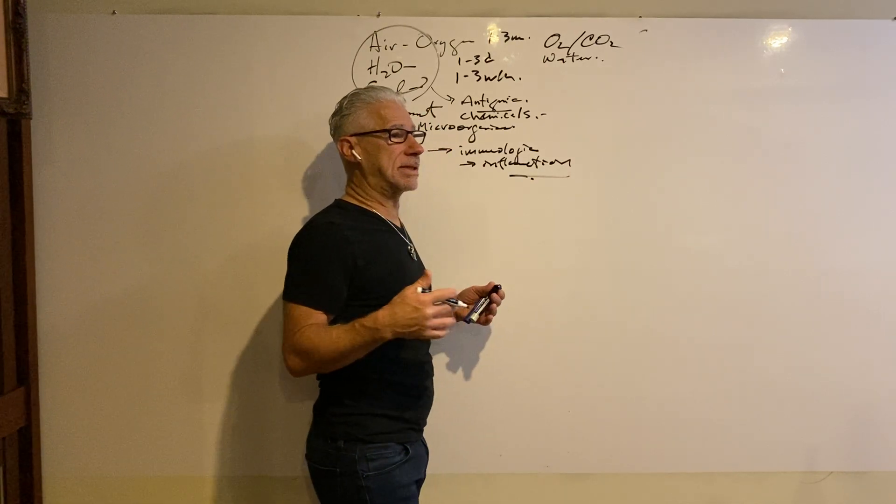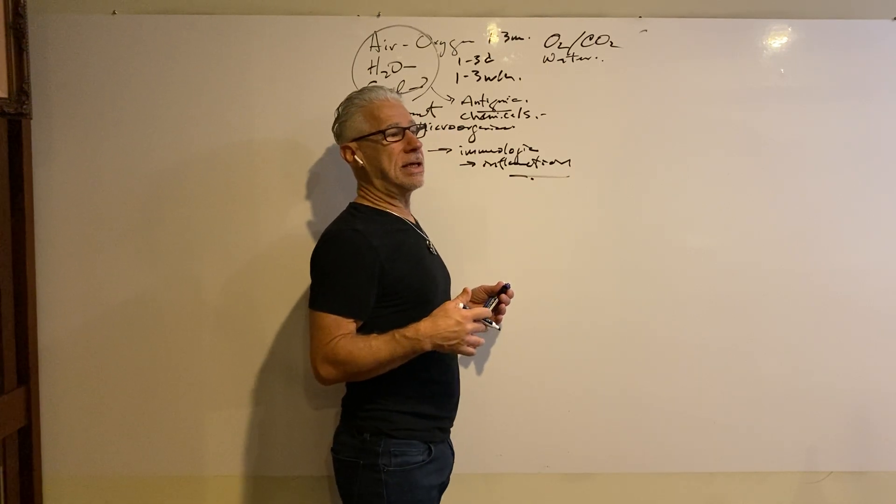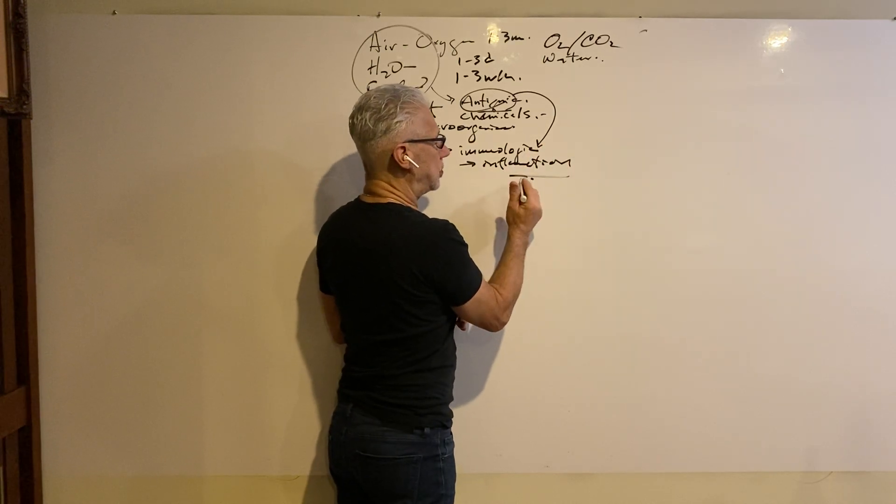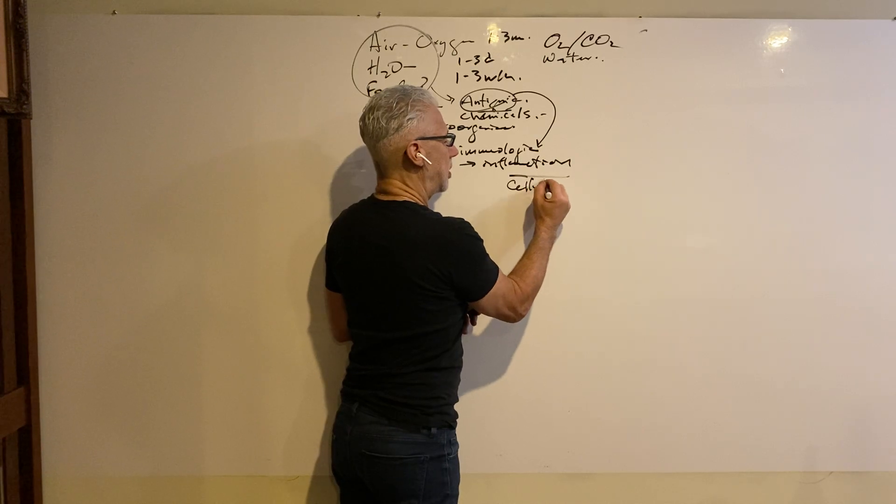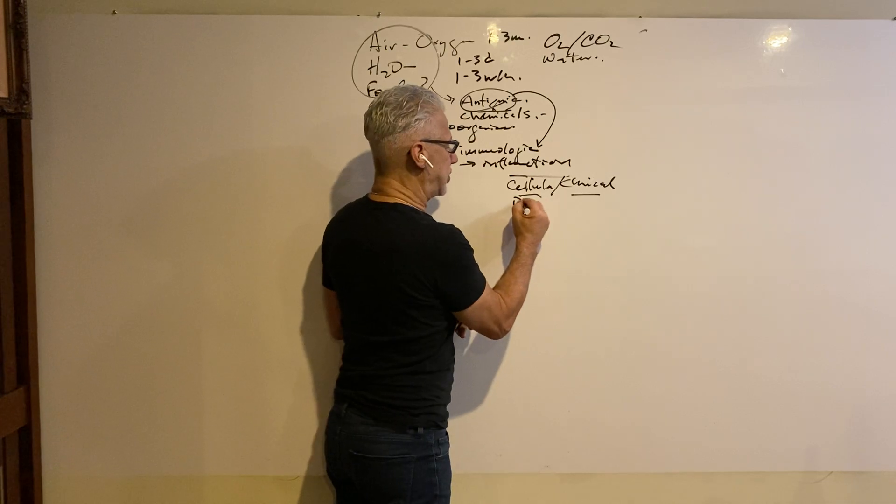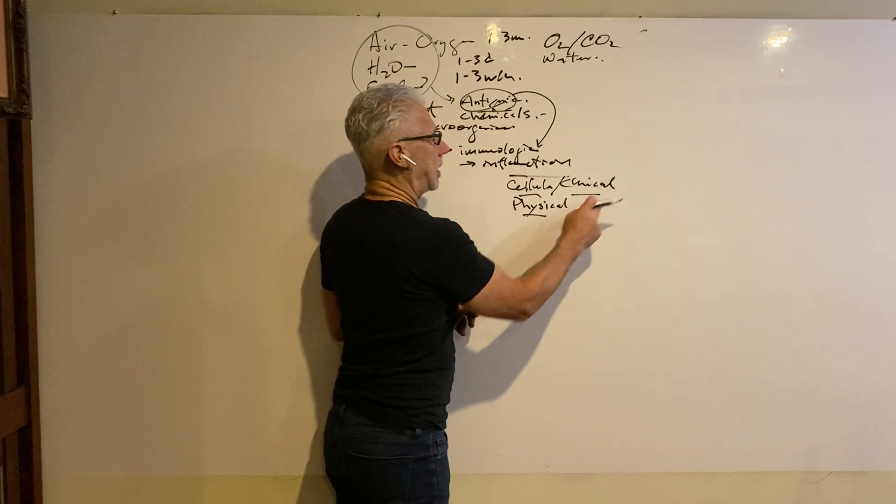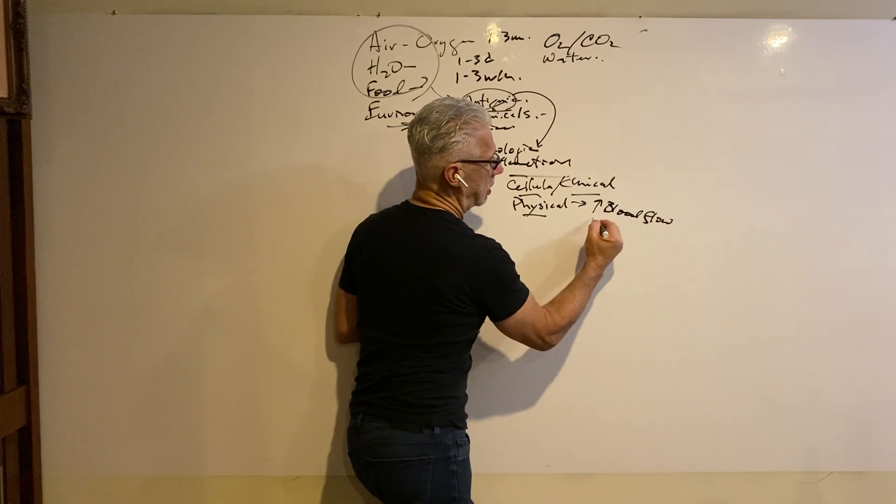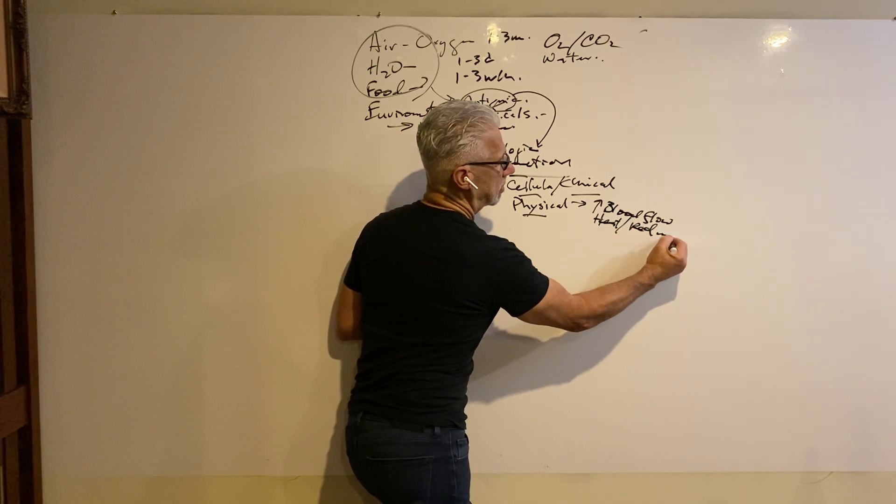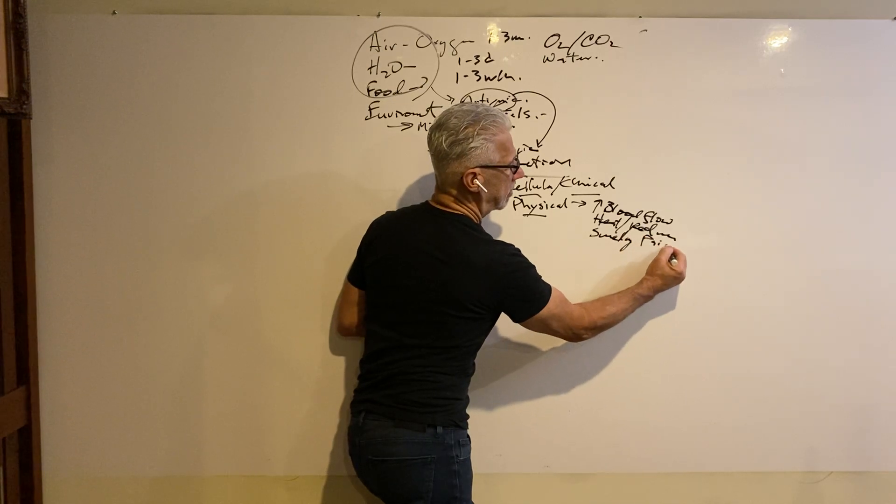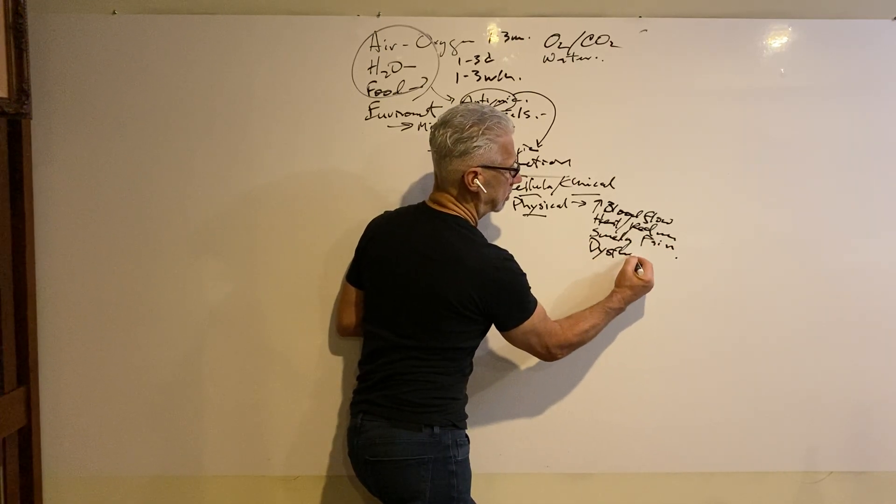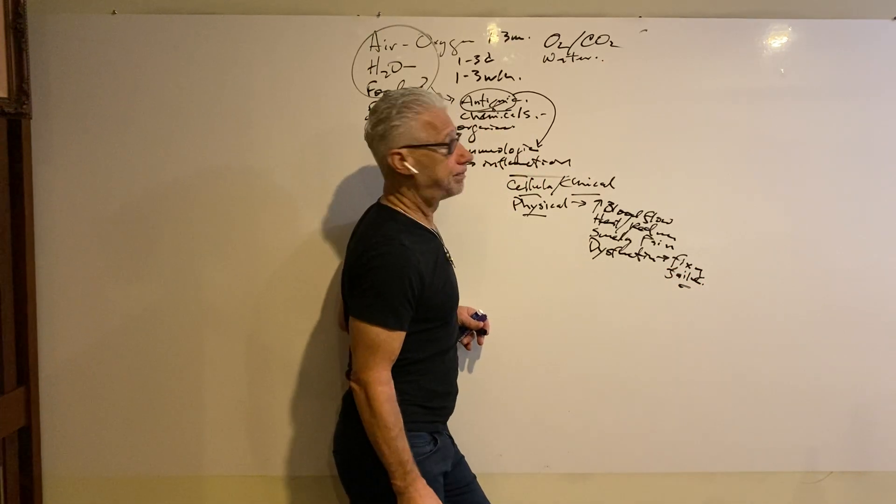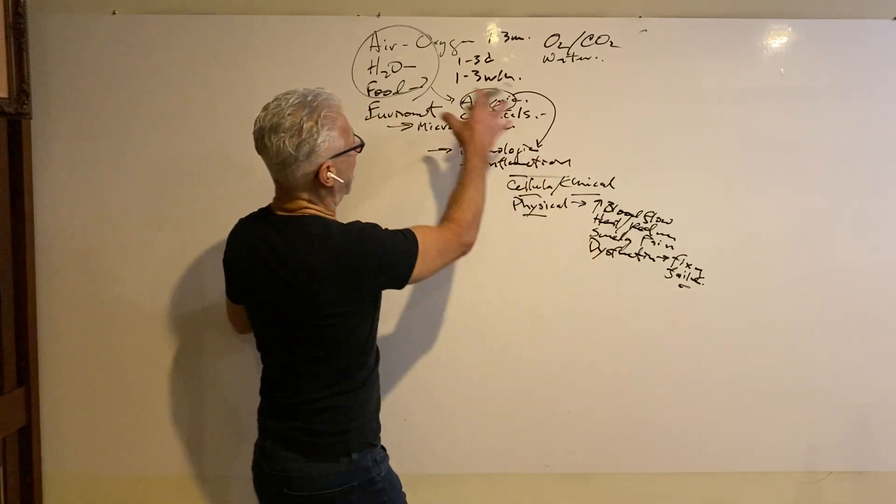They come with estrogen, progestins. They come with the components that elicit the inflammatory reactions, which we call them antigens, which stimulates our immune system to bring upon the cellular and chemical and physical components of inflammation, which require increased blood flow. This is an important component, which elicits heat, redness, swelling, pain, and dysfunction, and ultimately potentially either fixing or failure of the structure.